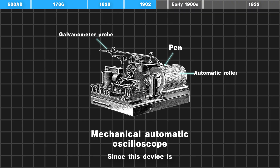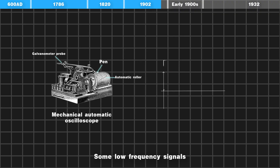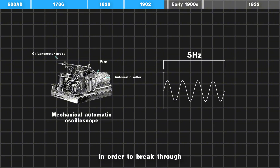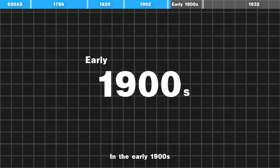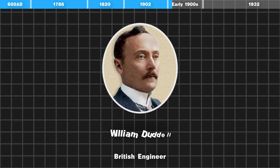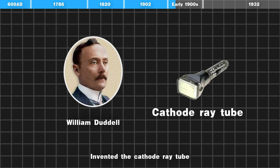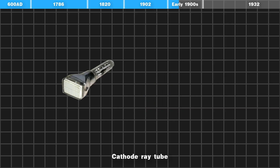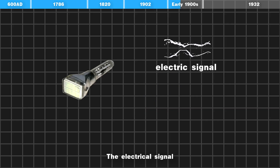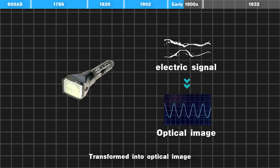Since this device uses mechanical transmission, it could only test low-frequency signals. In order to break through the limitation of signal frequency, in the early 1900s, British engineer William Gardel invented the cathode ray tube, which transforms electrical signals into optical images.